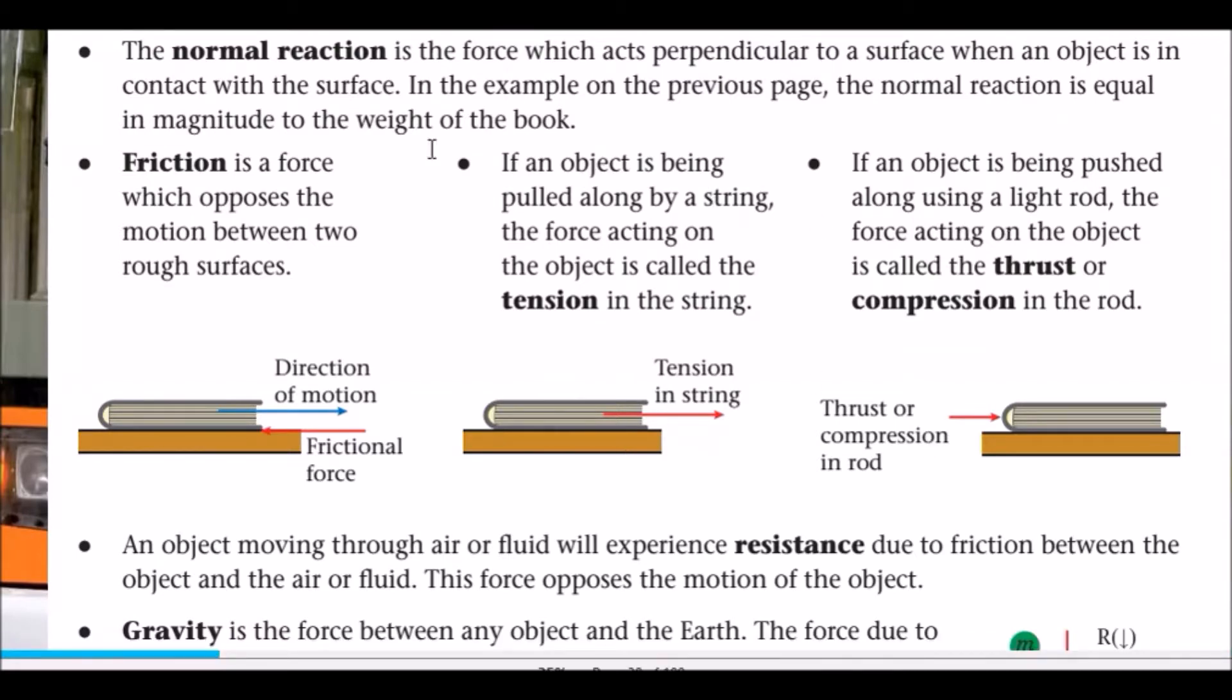For example, I'm just going to look at this information here. It says if an object is being pushed along using a light rod, the force acting on the object is called the thrust or compression in the rod. So have a look carefully. If it's acting towards it, here is the thrust.